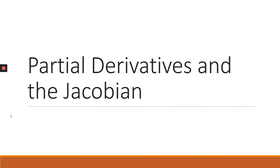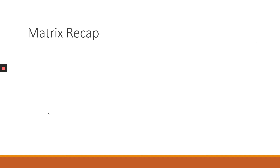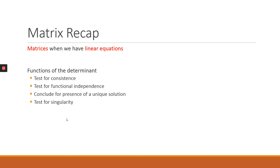In this video, we're going to continue with the application of derivatives, looking at the Jacobian. We'll start with a quick recap of what we learned in topic two when we looked at matrices, where we learned that we can use matrices to solve for the unique solution when we have linear equations. We saw how we use the determinant to test for consistency and functional independence, which are both critically important when we want to ascertain the presence of a unique solution.